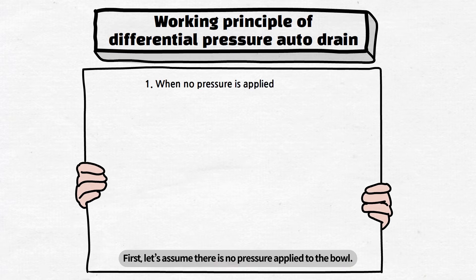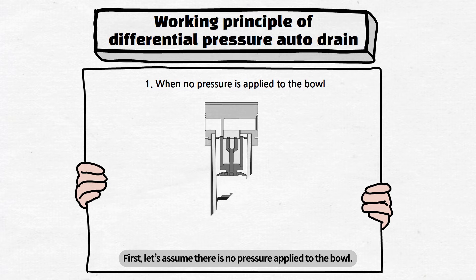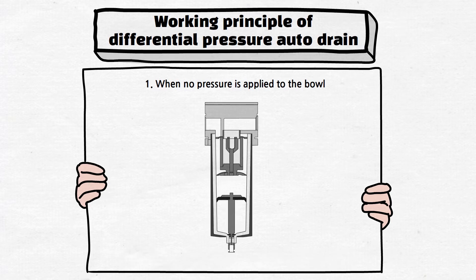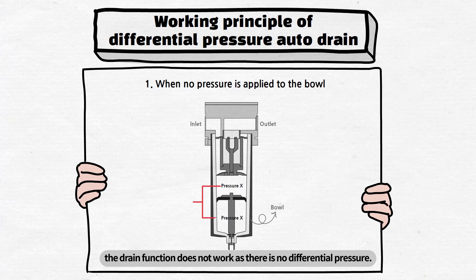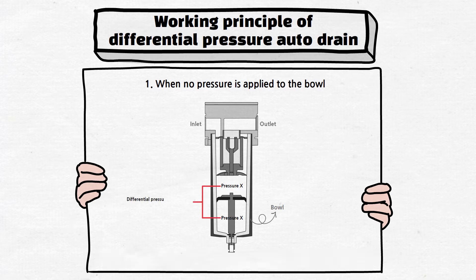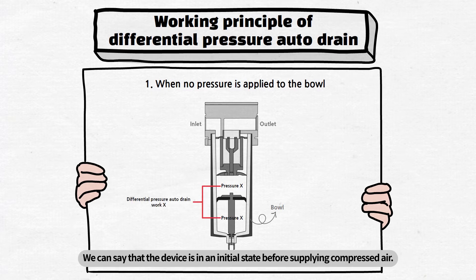First, let's assume there is no pressure applied to the bowl. If the pressure from compressed air does not affect the bowl, the drain function does not work, as there is no differential pressure. We can say that the device is in an initial state before supplying compressed air.